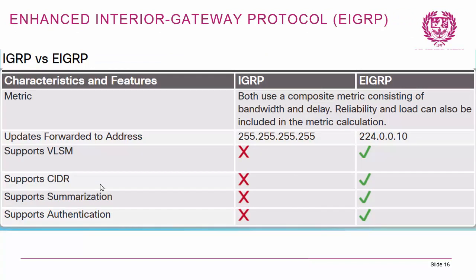Let's also look at the same type of picture for EIGRP, which is an enhancement of the deprecated IGRP. As for the metric, both use a composite metric consisting of bandwidth, delay, reliability, and load. EIGRP also uses a multicast address to forward routing updates. As with RIP, you need to use EIGRP if you want support for VLSM, classless interdomain routing, summarization, and authentication.